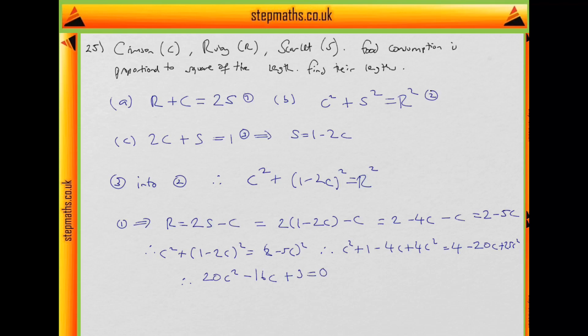which factors into 10C minus 3, 2C minus 1 equals to 0. Well, therefore we see C is in fact 3 tenths or 1 half. Let's consider these.